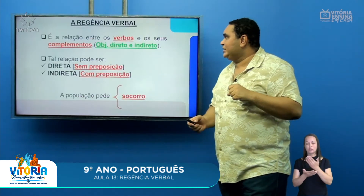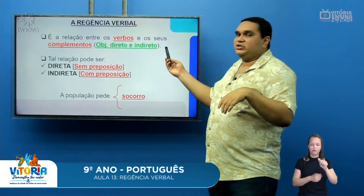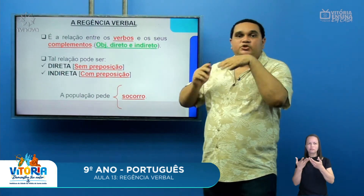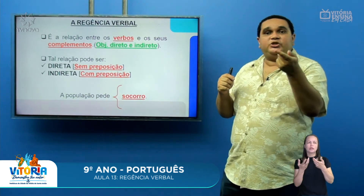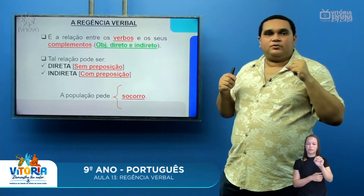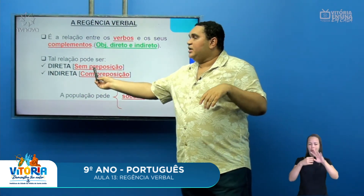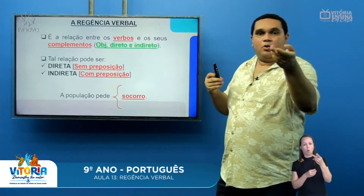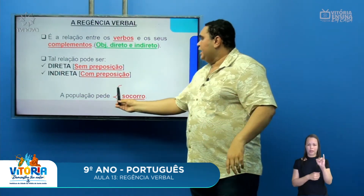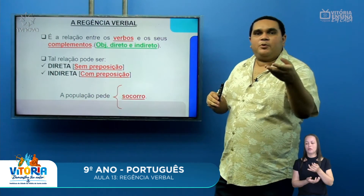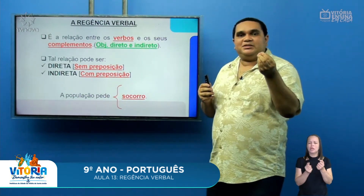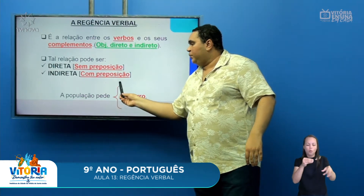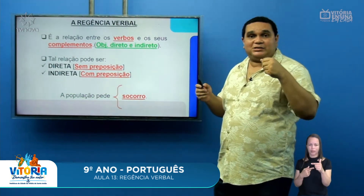Vamos começar a estudar a regência verbal. Como eu disse anteriormente, a regência verbal é essa relação entre o verbo e o seu complemento. Há alguns verbos que vão necessitar de complementos, que são justamente o objeto direto e o objeto indireto. Entre esse verbo e o complemento pode haver uma relação direta, sem a preposição, ou uma relação indireta com preposição. Por exemplo: 'A população pede socorro.' O verbo pedir pede um complemento — 'socorro' — e percebam que entre o verbo pedir e o seu complemento não há nenhuma preposição. É uma relação direta.